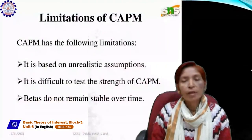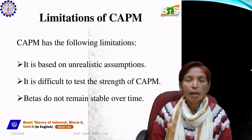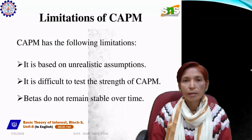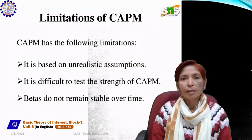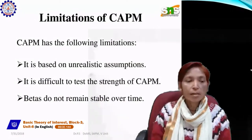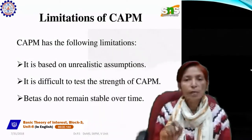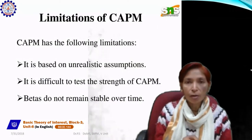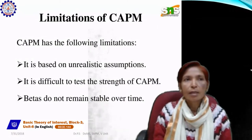Limitations of CAPM include: it is based on unrealistic assumptions making it difficult to test; it is difficult to test the strength of CAPM; and beta does not remain stable over time. In the diagram, we assume beta equals 1, but beta will not remain always constant because nothing is static in a dynamic world.